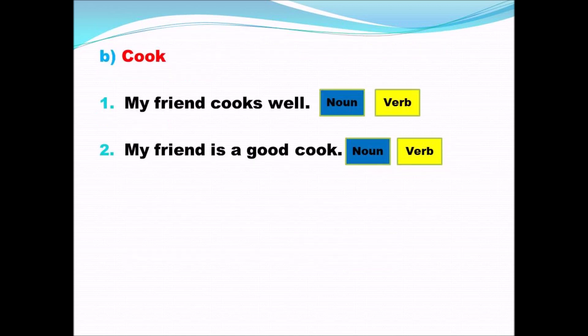The second word is cook. Sentence one: 'My friend cooks well' — cooking is an action done by the friend, so cooks is a verb — tick verb. Sentence two: 'My friend is a good cook' — here cook refers to a person who prepares food, which is a profession, so cook is a noun — tick noun. A word can be used both as a noun and as a verb. I have taught you examples A and B; the rest of the words in your book are your assignment to complete.